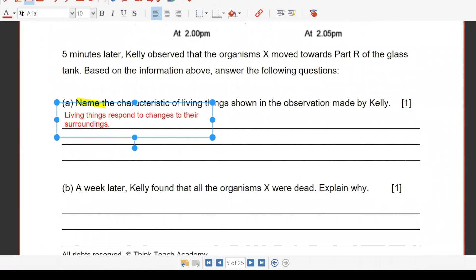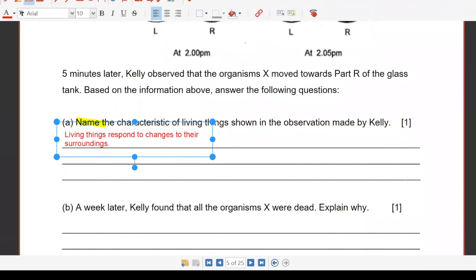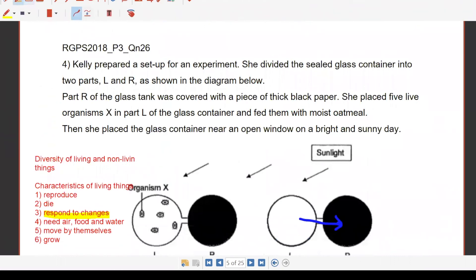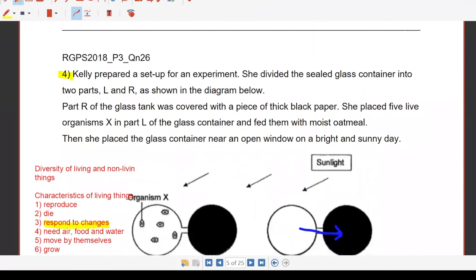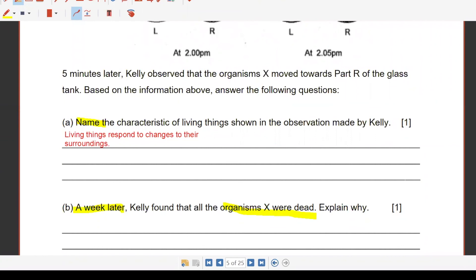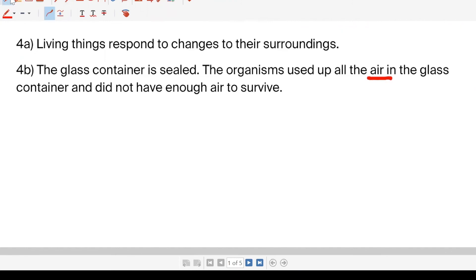A week later, Kelly found all the Organism X were dead. Now it's a week later. All died already. Explain why. Look carefully. There's something that's special in this whole paragraph of the whole long story. You tell me what is the clue that tells you why the Organism X died. Sealed glass container. Very good. This is the clue. So what happened to the sealed glass container? They used up all the air in the glass and didn't have enough air. The air is used for what? Why do we need air to survive? Why do human beings need air to survive? Why do animals need air to survive?